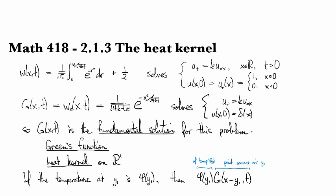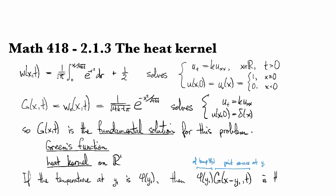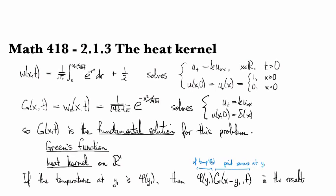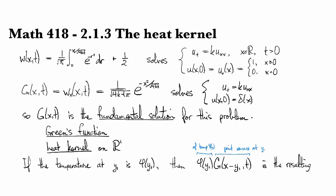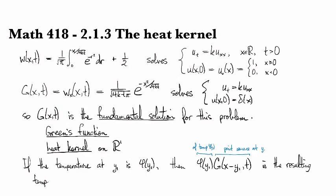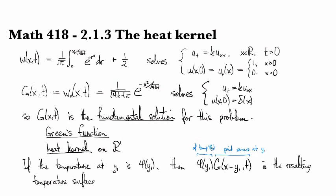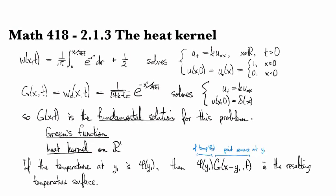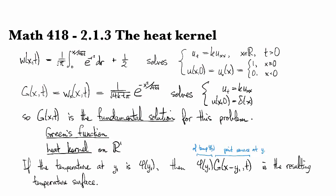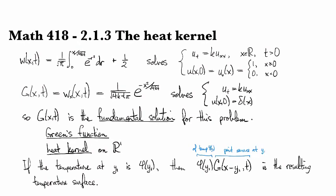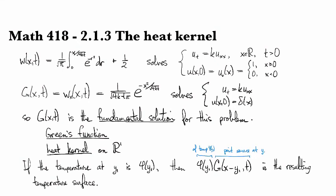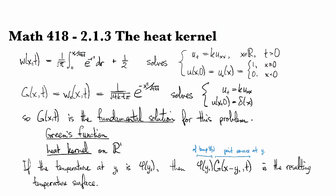So this is going to be the resulting temperature surface. By which I mean if you do a 3D plot of this as a function of x and t, then that resulting surface is going to be showing you how the heat behaves for a point source at y1 of magnitude phi y1.